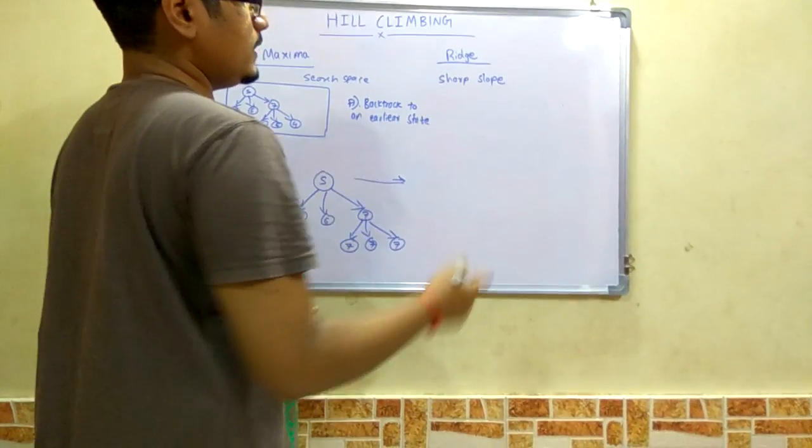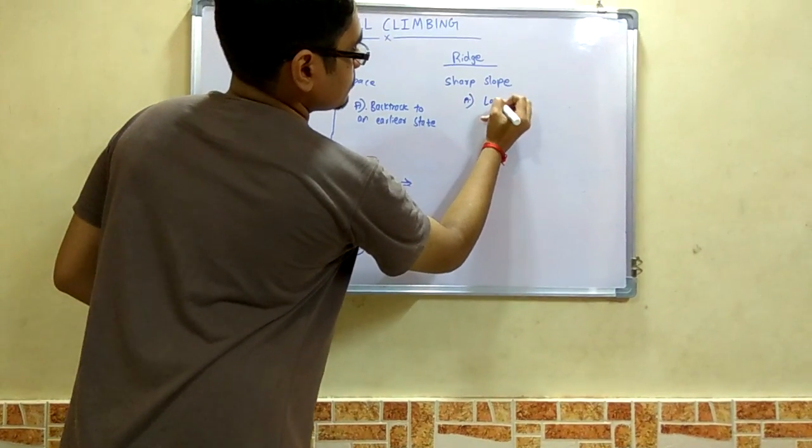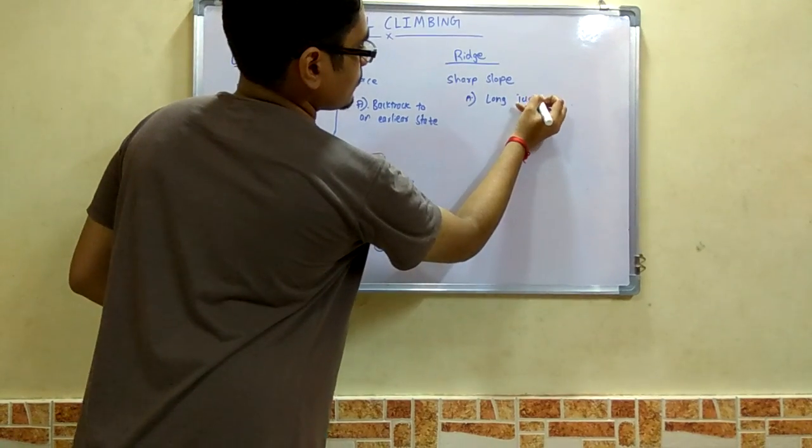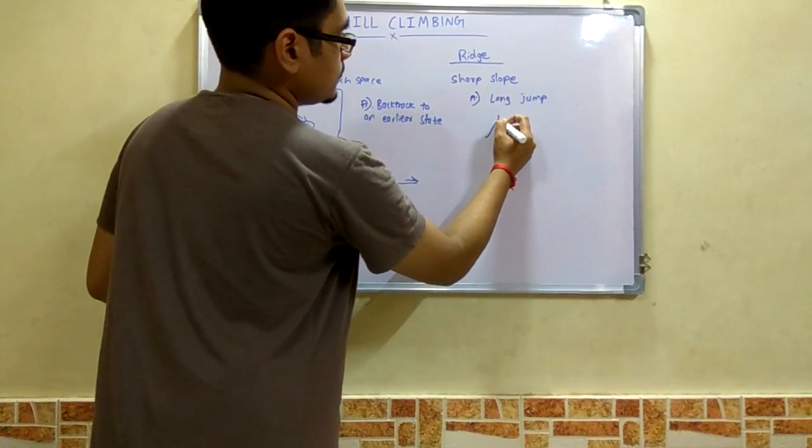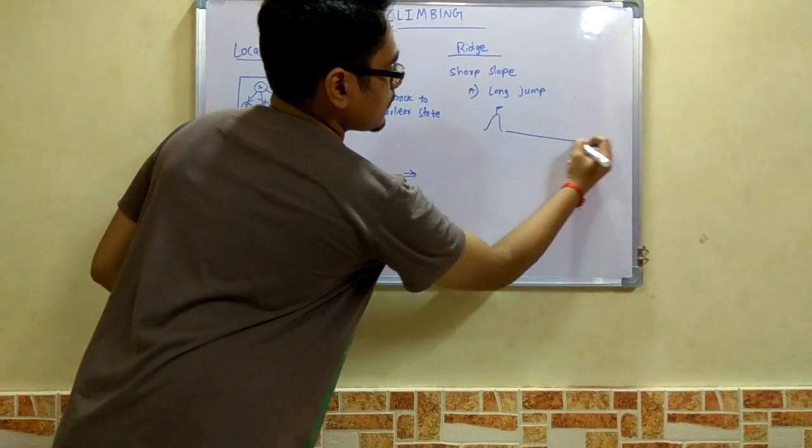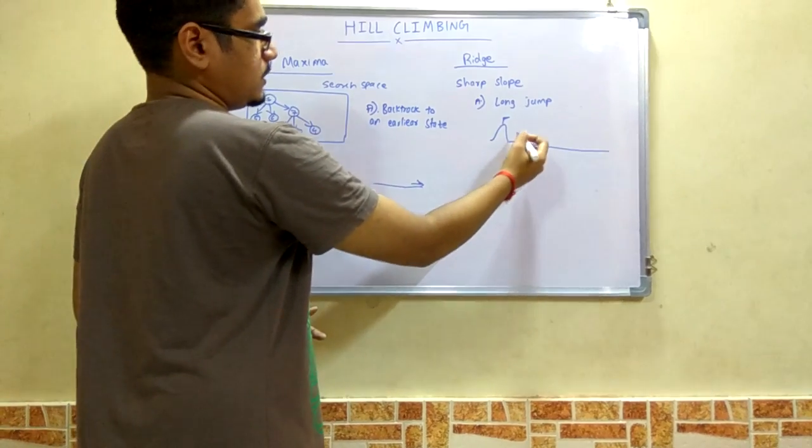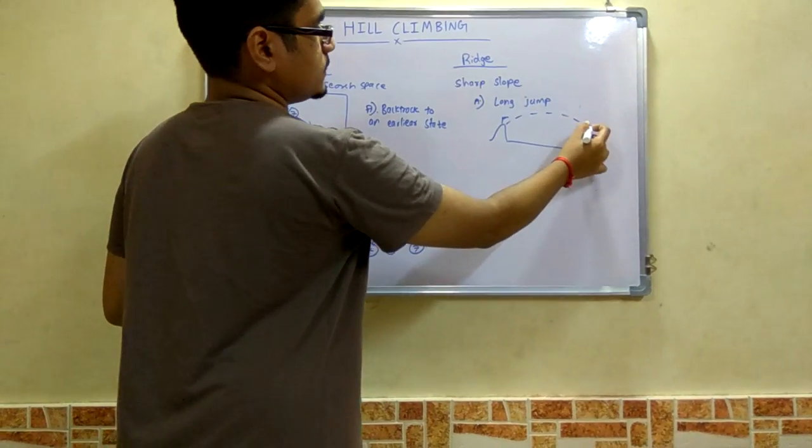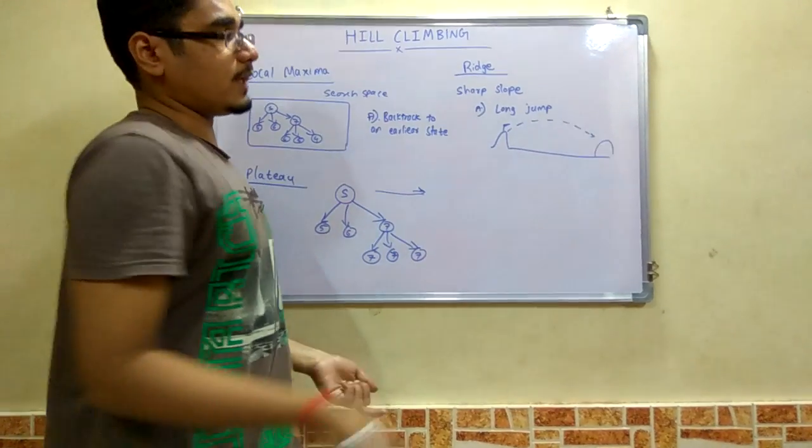Next is ridge. In order to avoid the ridge, we will make a long jump. We make a long jump from where we are at the current position. Suppose this is the current hill on which we are standing. In order to avoid a ridge, we will do a long jump. This jump can be anywhere, it can be in any other branch also.